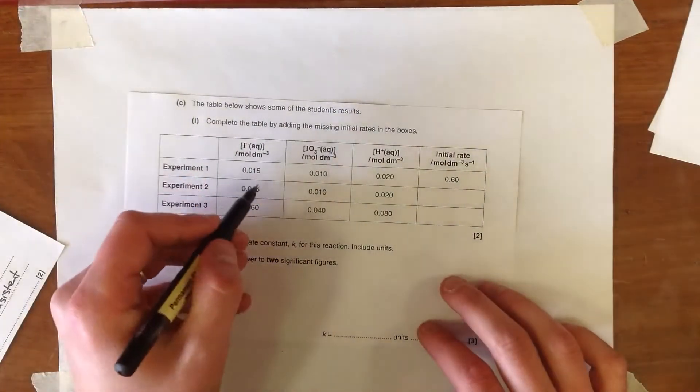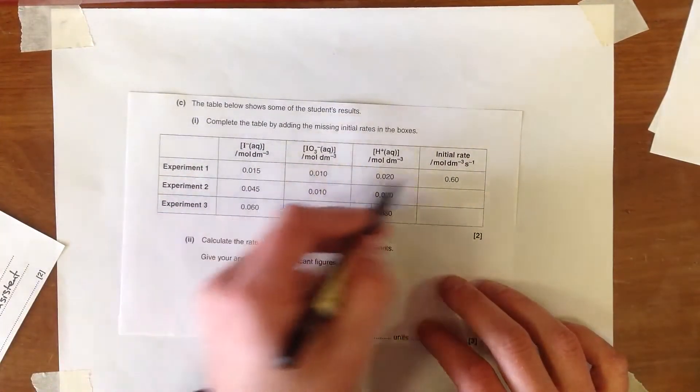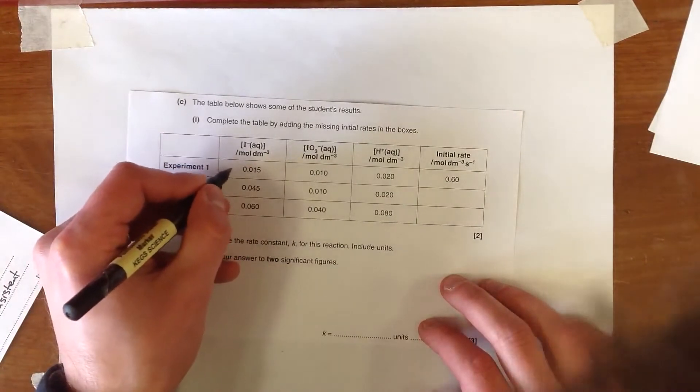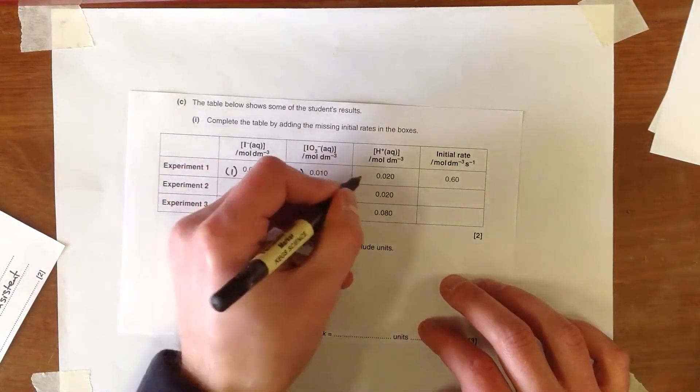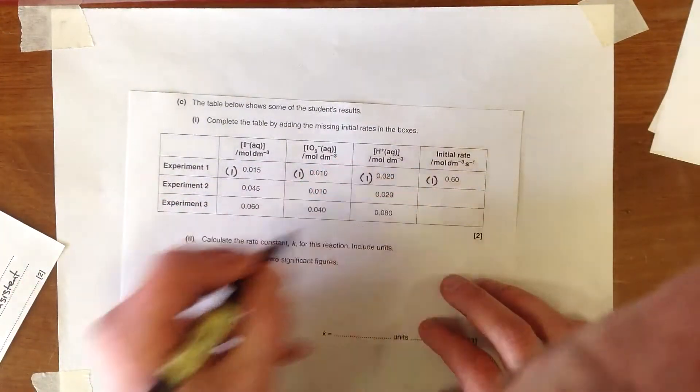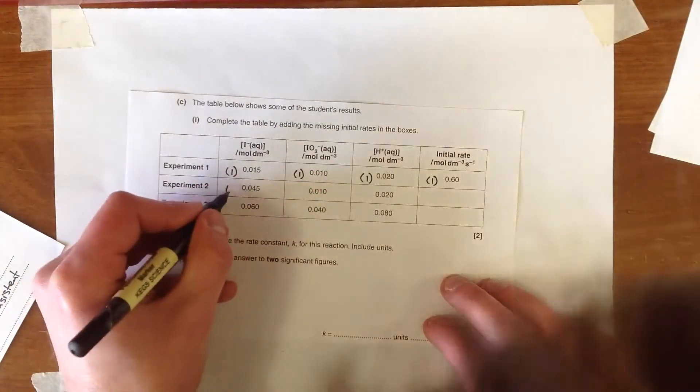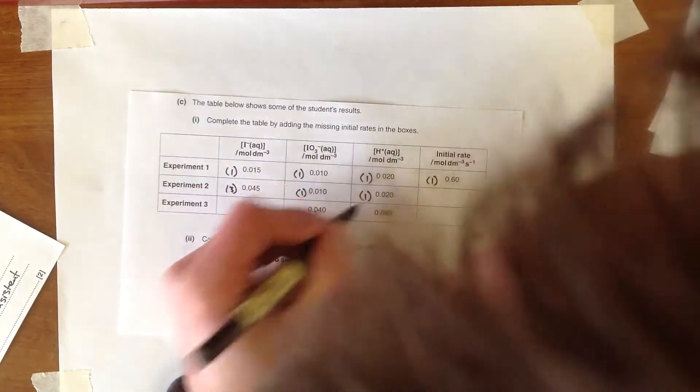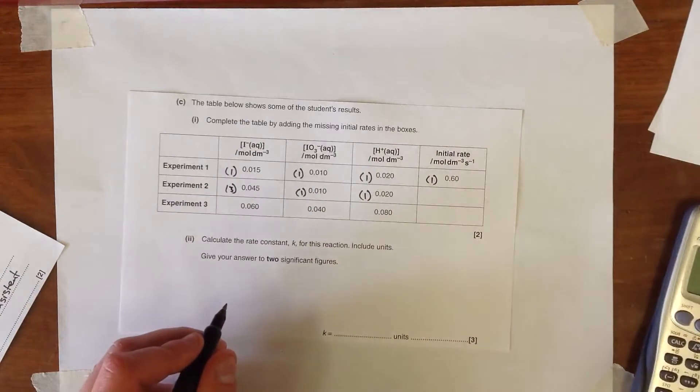The first thing is to make everything relative to the numbers in the top row. So if we treat this as being relative to that number, it would be a 1, a 1, a 1, and this would be a 1. This one is three times as big. This one stayed the same, and this one has also stayed the same. So when we want to work out the initial rate,